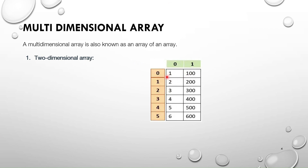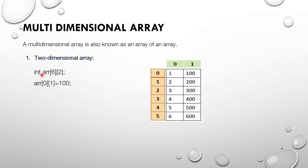This is how a two-dimensional array looks — rows and columns, a matrix format. To declare a 2D array you mention two square brackets: the first indicates rows and the second indicates columns. For example 'int array[6][2]' means 6 rows and 2 columns, giving a total of 12 elements of int type.